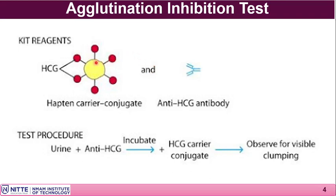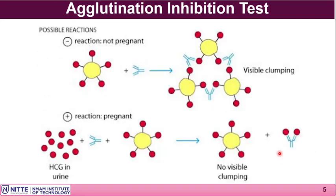The latex beads, shown in yellow, are coated with the HCG hormone using a hapten carrier linker molecule. The anti-HCG is a simple IgG antibody molecule — an immunoglobulin G antibody produced in the animal after injecting pure HCG. When a urine sample comes to the lab, the anti-HCG is added to it and mixed well, and then the HCG-coated latex beads are added and mixed again. You then observe for visible clumping.